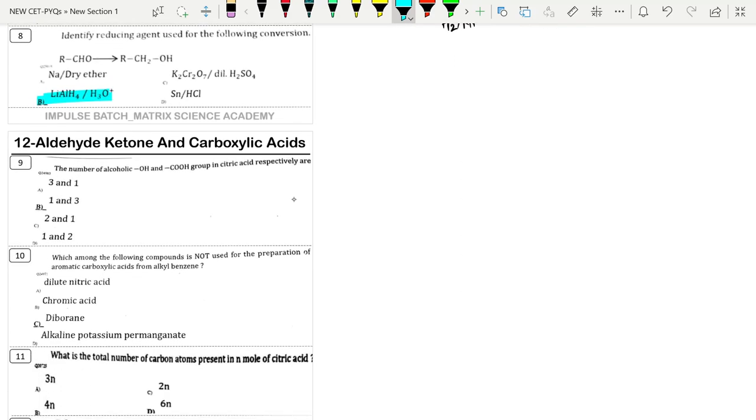Number of alcoholic (OH) and carboxylic (COOH) groups in citric acid. We have the structure: five carbons - first carbon, second, third, fourth, and fifth carbon. Here we will have COOH group, and third carbon will have OH group. This is citric acid. We can see there are total three COOH groups and one OH group. So correct option is option B.